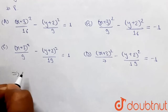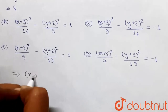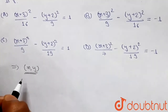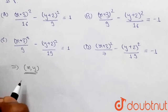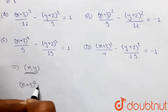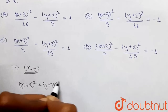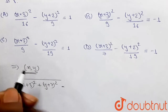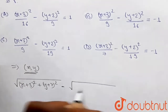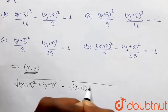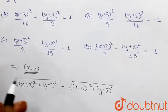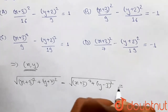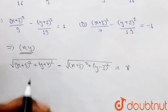Let's take any point on that locus as (x, y). The distance of this point from (-3, -7) will be √[(x+3)² + (y+7)²], and the distance from (-3, 3) will be √[(x+3)² + (y-3)²]. The difference of these distances is given as 8.